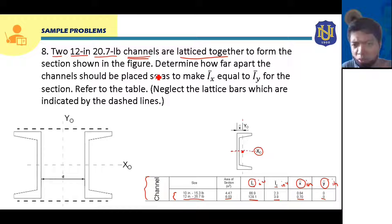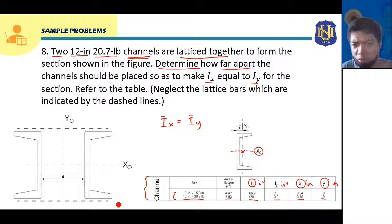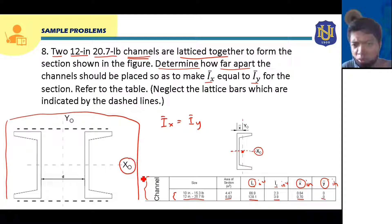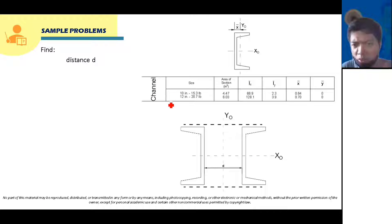Again, for this problem we are asked to determine how far apart the channels should be placed so as to make I sub bar X equal to I sub bar Y. This is the moment of inertia of the two channels latticed together — we are considering this composite figure. The reference axes are x sub o and y sub o. So let's start solving. The condition is that I bar sub X should equal I bar sub Y.